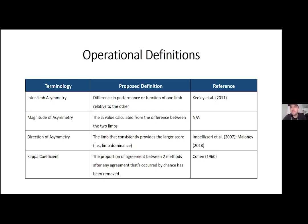The direction of asymmetry refers to which limb scores better out of the two, giving context to that relative percentage difference. In the example of 25 centimeters on the right and 20 on the left — a 20 percent asymmetry — we say the direction favors the right hand side, because in a jump test the desired outcome is always the larger value. That tells us which limb is outperforming the other.